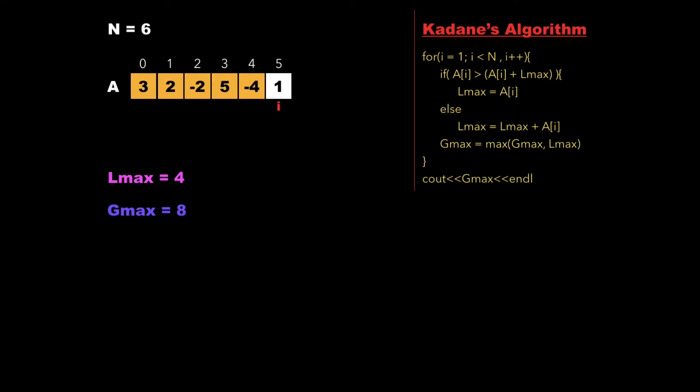Now i points to the last value, 1, and we check whether 1 is greater than 1 + 4, which is 5. Since 1 is not greater than 5, we update local max as lmax + a[i] = 5. Since local max is not greater than gmax, gmax remains as it is. We have completed the for loop and got the value of gmax as 8.